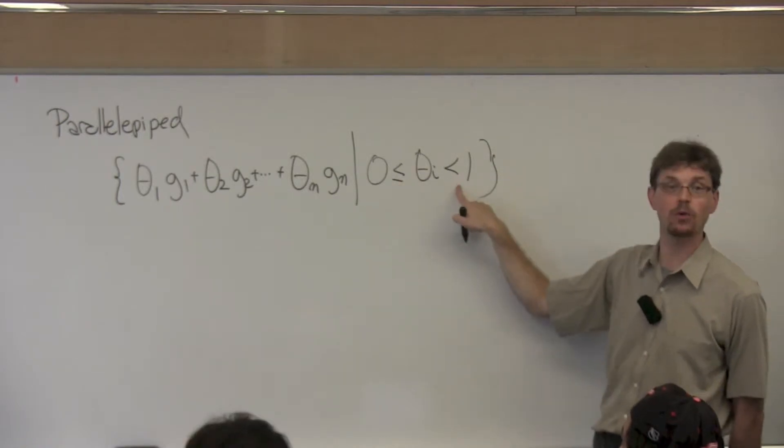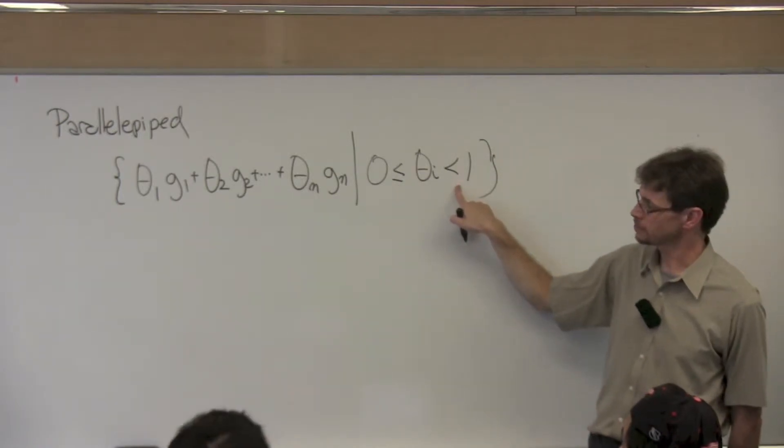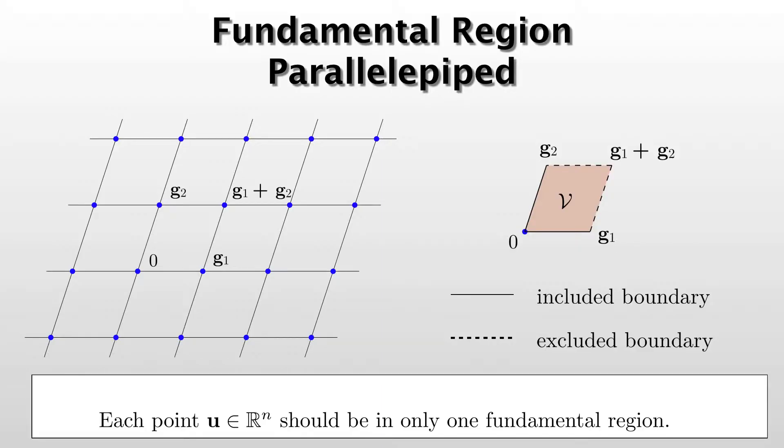So you can see that anywhere inside of this region is satisfied by that equation by taking scaling the generator vectors by a number between 0 and 1.